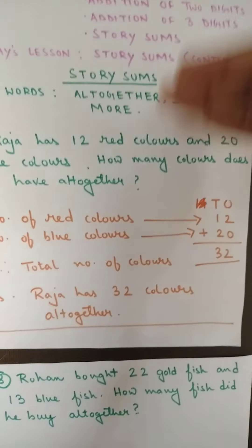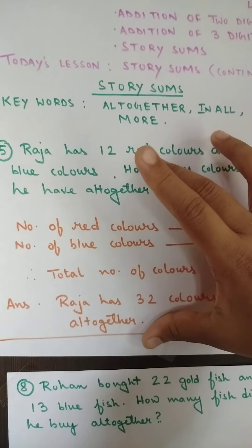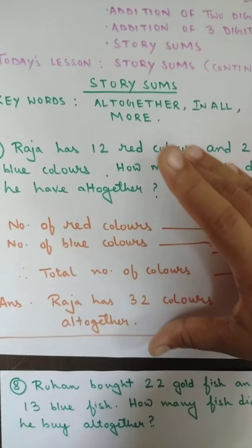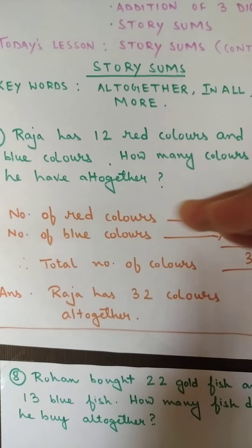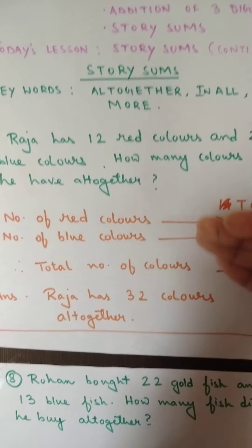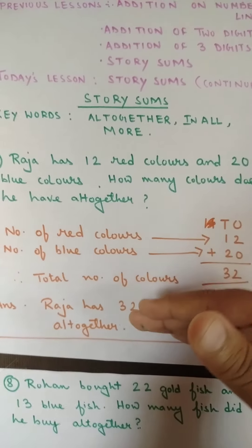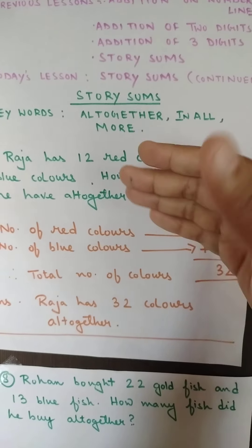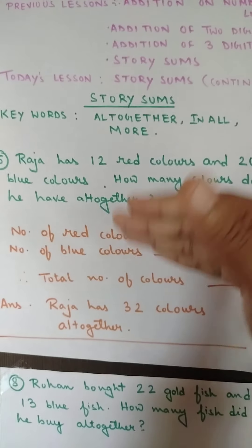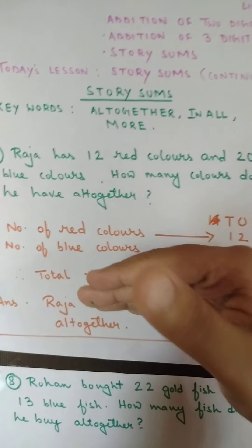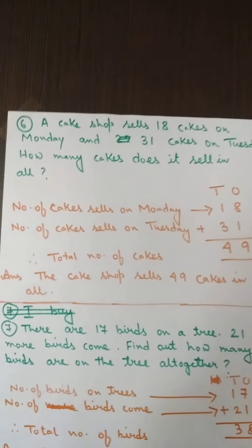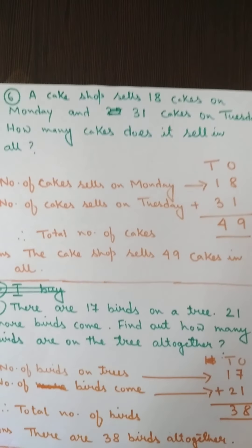You will be doing one sum per page. Parents, please be careful that students are solving only one particular story sum per page. After you finish this, you will do number six.